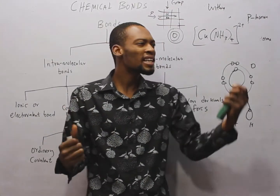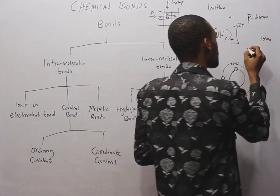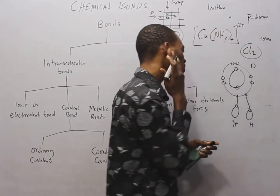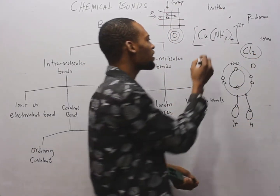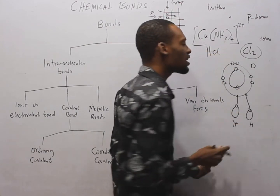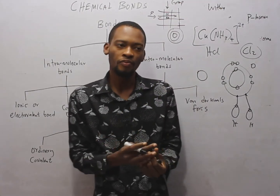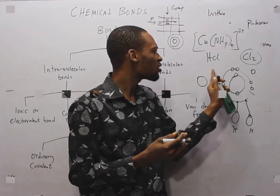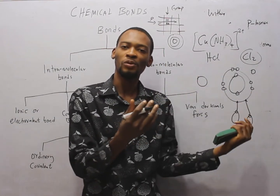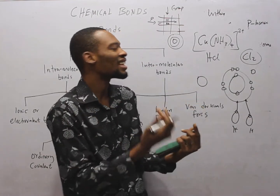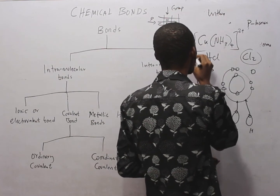Covalent bonding involves sharing of electrons and occurs between two elements whose electronegativity difference is very close or even zero. For example, the electronegativity difference in a Cl₂ molecule is zero, so it is a covalent bond. In HCl, chlorine needs one electron and hydrogen needs one; they share — covalently bonded. Similarly, NH₃ and CH₄ are covalently bonded.